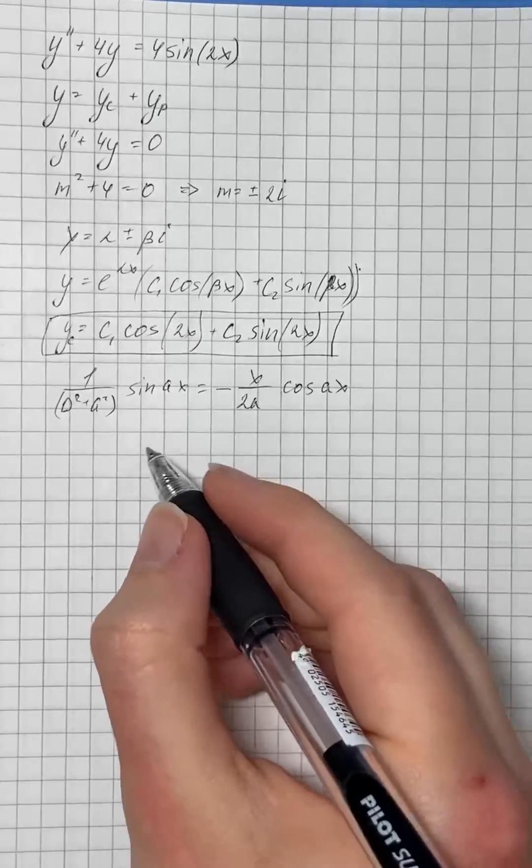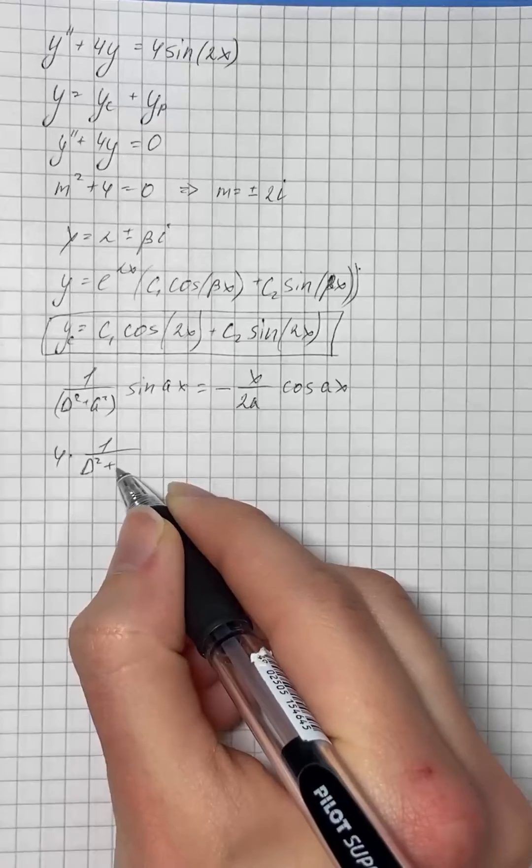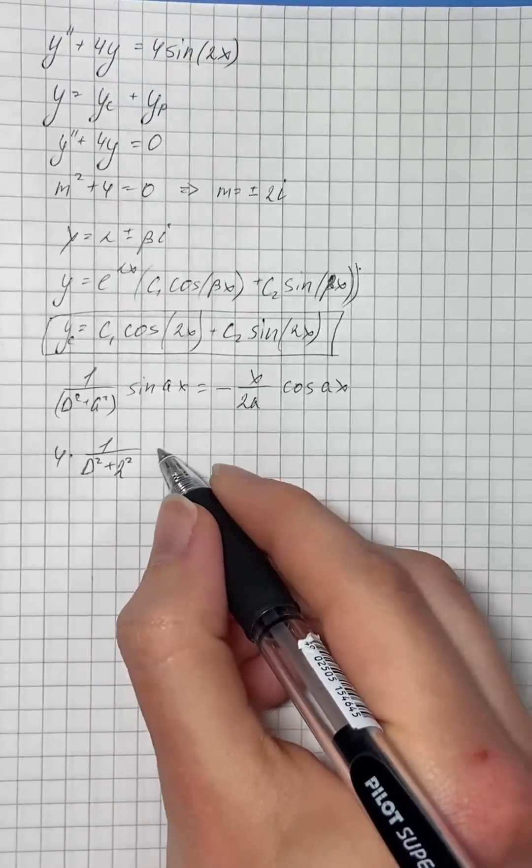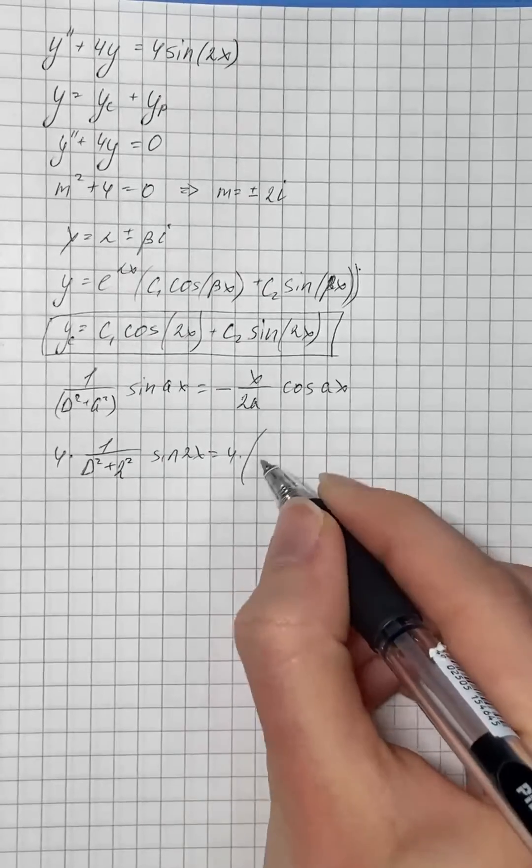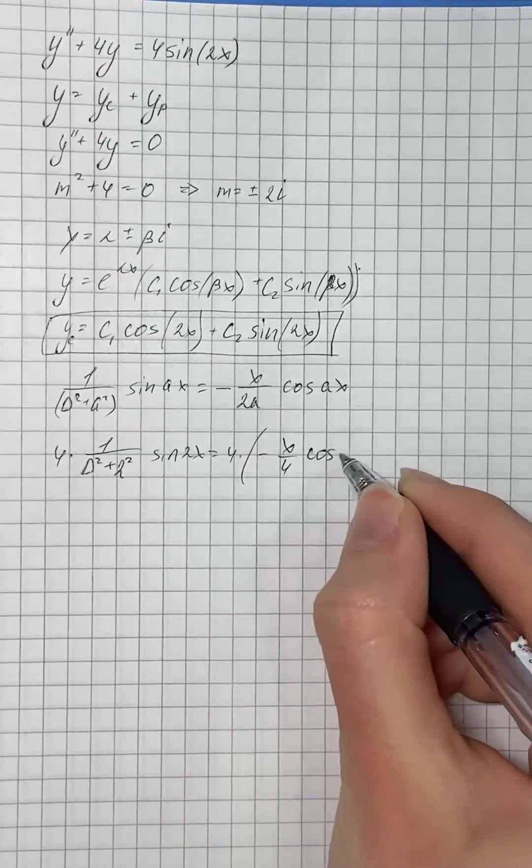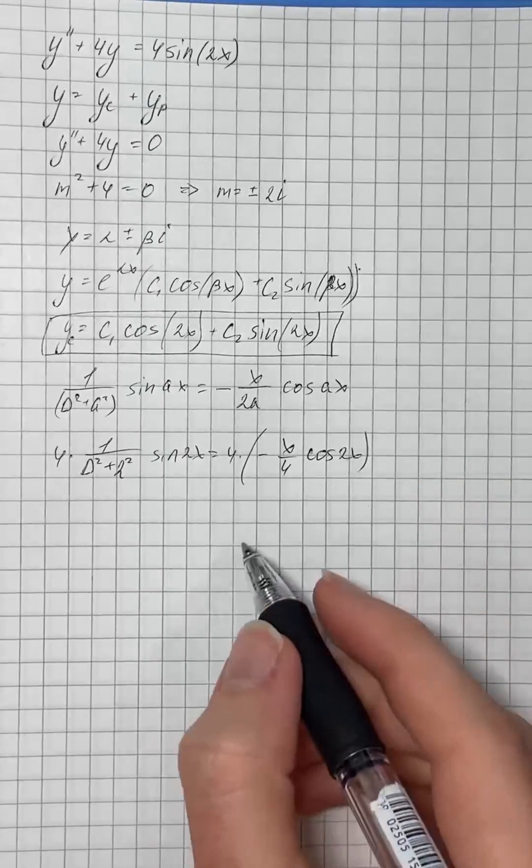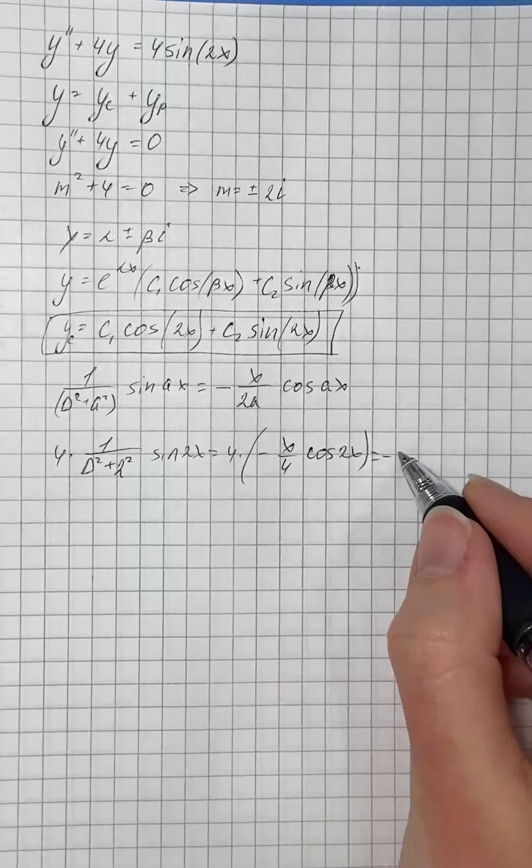Similarly, 4 times 1 over d squared plus 2 squared times sine of 2x equals 4 times negative x over 4 times cosine of 2x, which equals negative x times cosine of 2x.